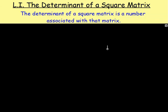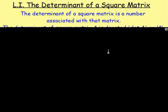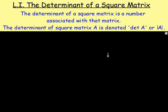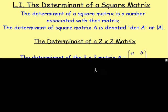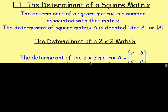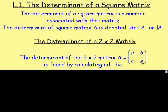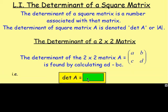It's a number that is associated with that matrix which can then be calculated. The determinant of a square matrix A is denoted as det A, or with modulus signs either side of A. The determinant of a 2x2 matrix with entries A, B, C, and D is calculated as A times D take away B times C — that is, AD minus BC.